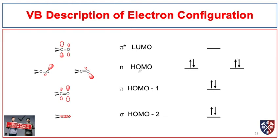Considering the electrons in the carbonyl group: the carbon-oxygen pi bond is not the highest occupied molecular orbital but rather HOMO minus one. The n orbitals holding lone pairs on oxygen are the highest occupied molecular orbitals — in the valence bond description they are considered degenerate and at the same energy level. The pi star orbital is the lowest unoccupied molecular orbital (LUMO), and it is responsible for interacting with a filled orbital in a nucleophile. The HOMO of a nucleophile interacts with this empty pi star orbital.